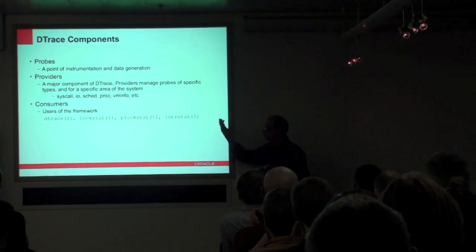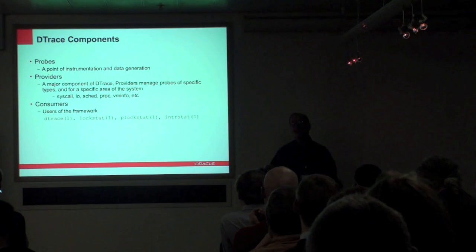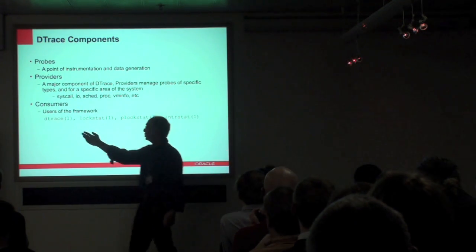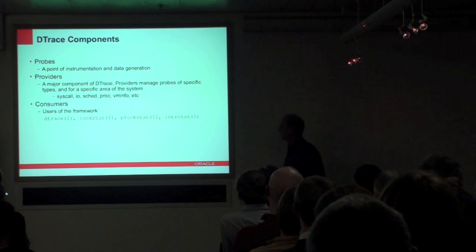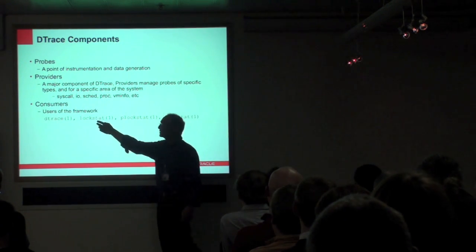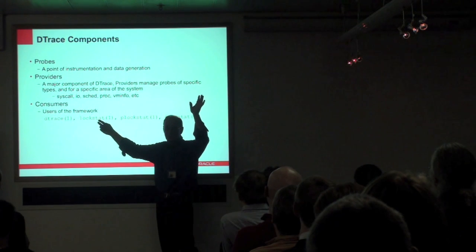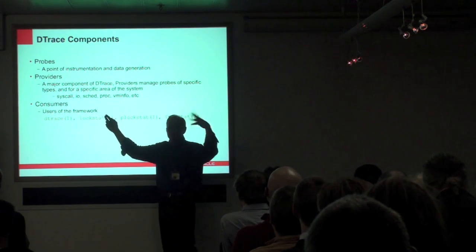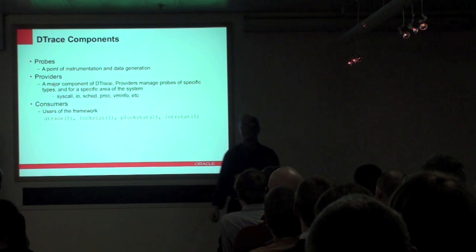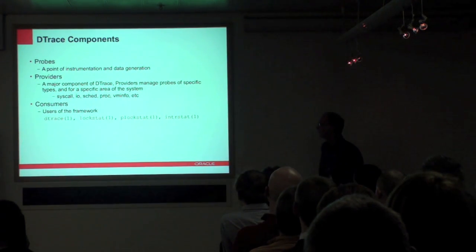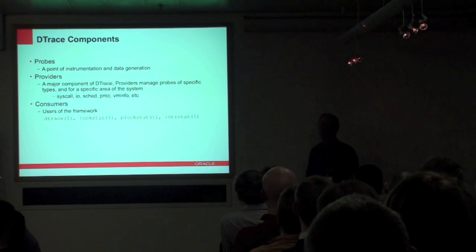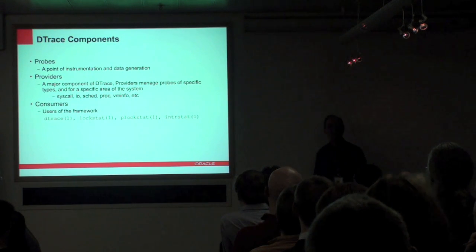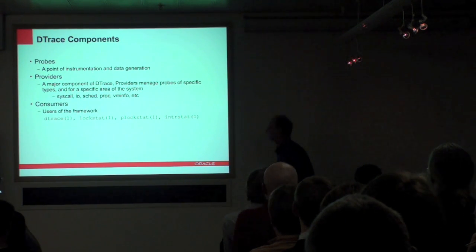Then we have consumers — basically all of the commands that use DTrace. DTrace itself is the main one you'll see used almost exclusively. LockStat has been a Solaris tool since Solaris 7, and it was re-implemented in Solaris 10 as a DTrace consumer. It gives you statistics on kernel mutex locks and reader-writer locks, and allows you to profile the kernel.